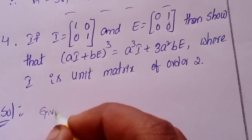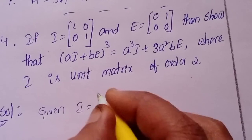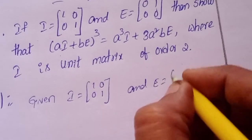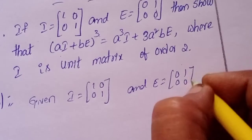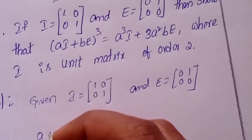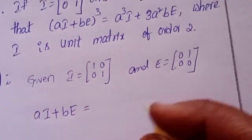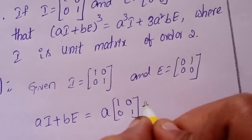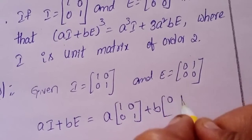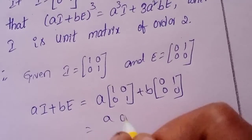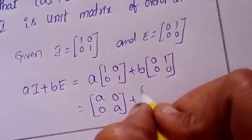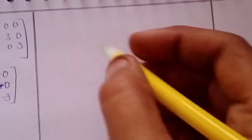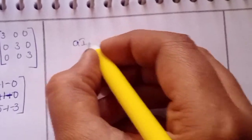Solution. Given I equals [1,0 / 0,1], order 2, and E equals [0,1 / 0,0]. Now compute aI + bE: that is a times [1,0 / 0,1] plus b times [0,1 / 0,0], which gives [a,0 / 0,a] plus [0,b / 0,0] equals [a,b / 0,a].